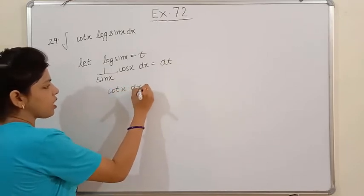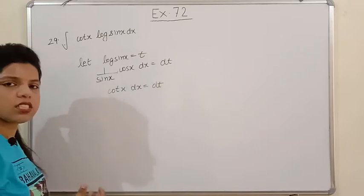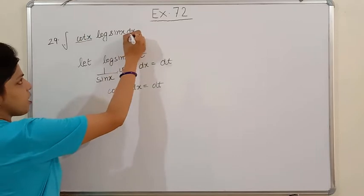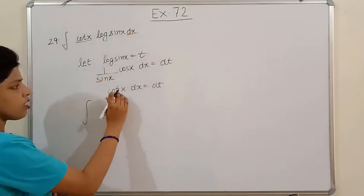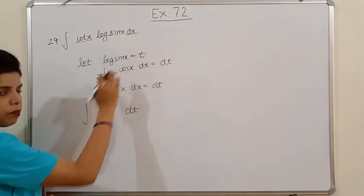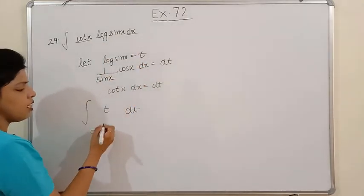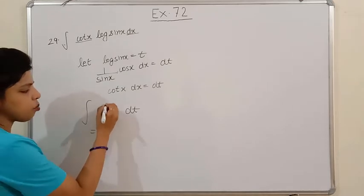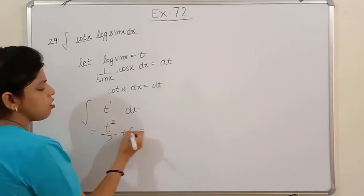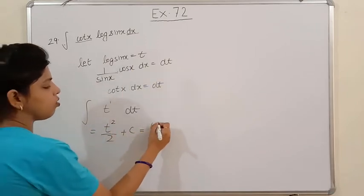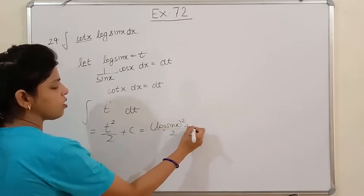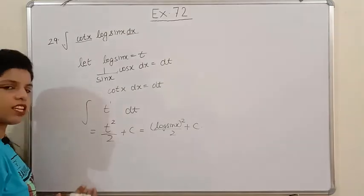So cotx dx = dt. In the question cotx dx is already there, and its value is dt. And log(sinx) is substituted as t. So the integration of t gives t²/2 + c. Putting back t = log(sinx), the answer is (log sinx)²/2 + c. Please note down.